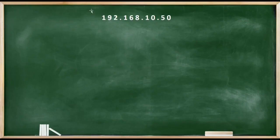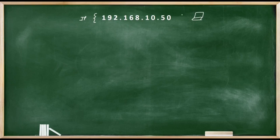Suppose we have an IP address that is 192.168.10.50, assigned to this laptop. This IP address doesn't have any meaning at all unless you write subnet mask with it. So if you write 192.168.10.50/24, where this /24 is the subnet mask, this IP address becomes meaningful.